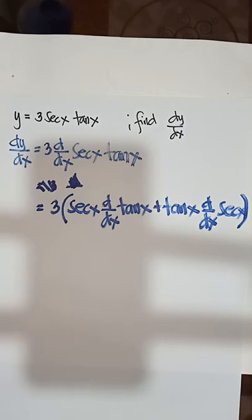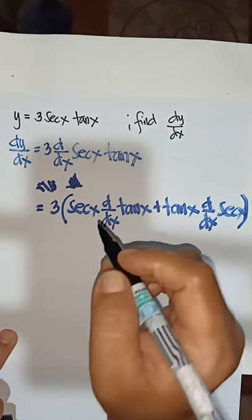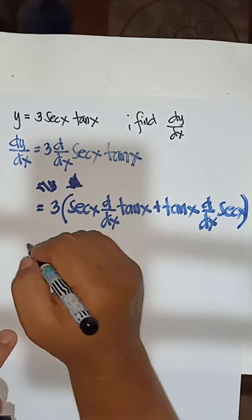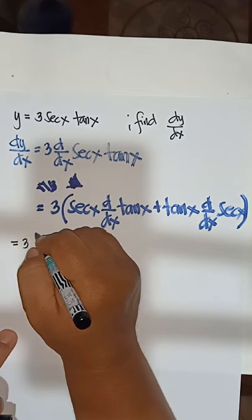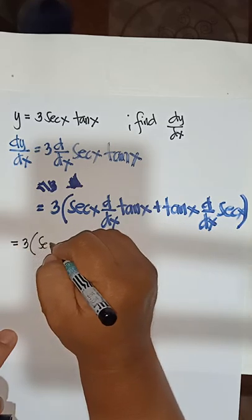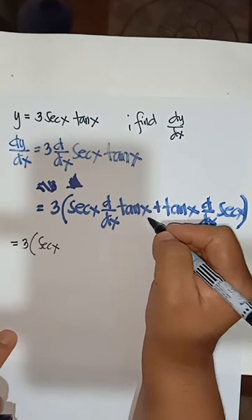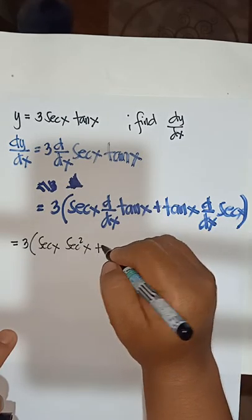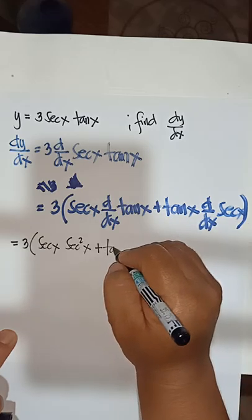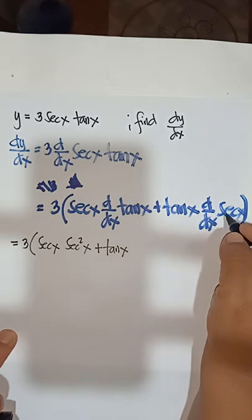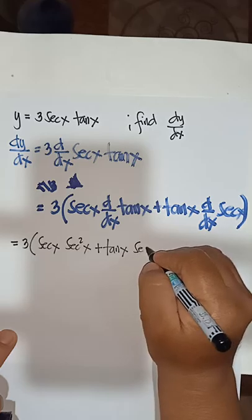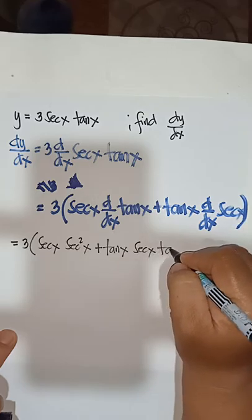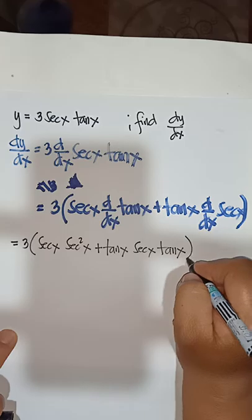Okay, so therefore, what is now the derivative of secant tangent x? So you will have 3, secant x, derivative of tangent, that is secant squared x, plus tangent x, derivative of secant, secant x tangent x.